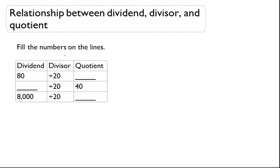So here it says fill in the numbers on the lines. The dividend is the thing we're going to divide, the divisor is the thing we're dividing by, and the quotient is the answer.